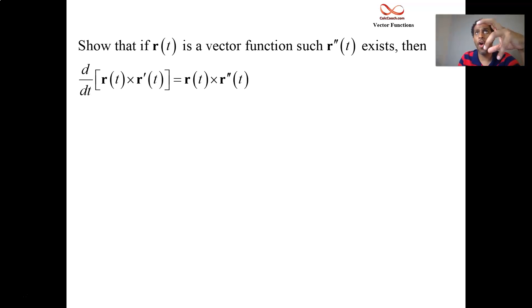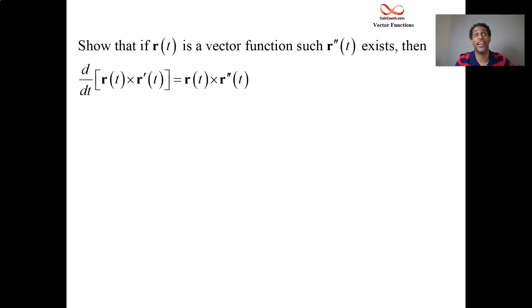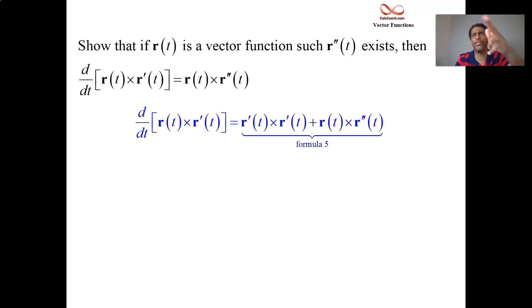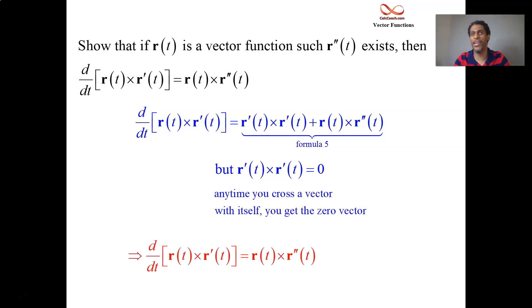If you have a vector function r with a second derivative, it turns out that the derivative of the cross product of the velocity and position is equal to the cross product between acceleration and position. Let's check it out. Left-hand side: derivative of a product — use the product rule. Derivative of the first cross the second, plus the first cross the second. What happens when you cross a vector with itself? You get zero. So we have exactly what we're trying to prove: the derivative of r cross r prime equals r double prime cross r.